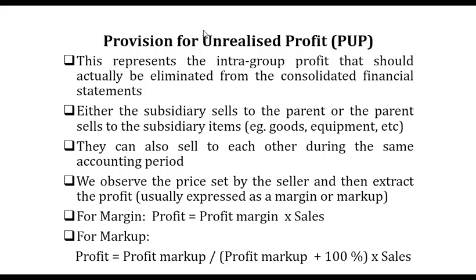The first step to obtain the provision for unrealized profit is to extract the profit on sales made. After extracting the profit, we need to know the percentage of goods still in inventory — whether in the subsidiary or the parent — they are still in the whole group, so we have to eliminate them. If the company uses the margin policy, profit is given as a percentage of sales, so profit equals profit margin times sales. For markup, profit is given as a percentage of cost, so profit equals markup divided by (markup + 100%), multiplied by sales.